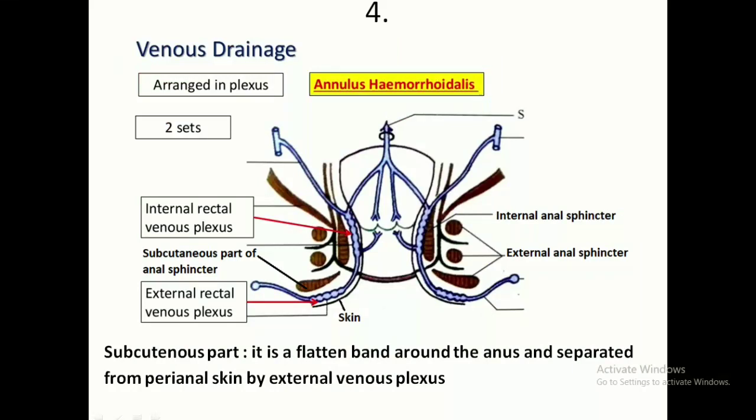The subcutaneous part of the anal sphincter is situated around the anus and separated from the perianal skin by the external venous plexus. This is the location of the internal venous plexus, deep to the internal anal sphincter.